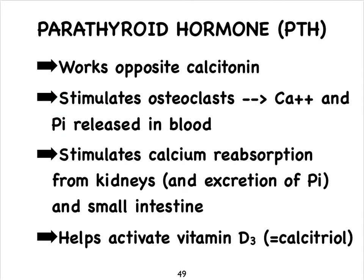Parathyroid hormone works opposite calcitonin. Remember, calcitonin is secreted by the thyroid gland. Parathyroid hormone is going to stimulate osteoclasts — the cells that break down bone tissue. This hormone doesn't just impact bone tissue by stimulating osteoclasts, but also affects our kidneys and our small intestine. Let's take a look at this with the help of a diagram.